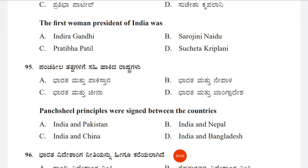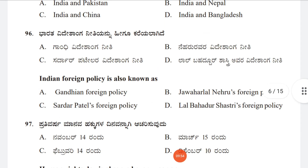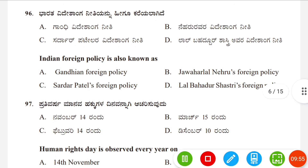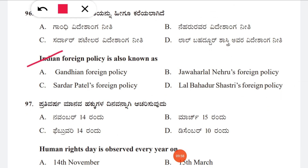Question 95: The Panchashila principles were signed between — option A: India and Pakistan, B: India and Nepal, C: India and China, D: India and Bangladesh. The correct answer is C, India and China.